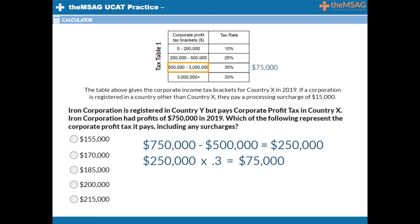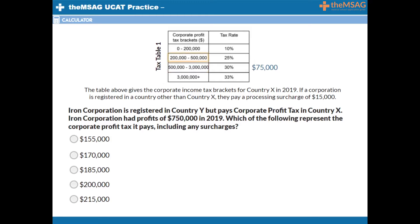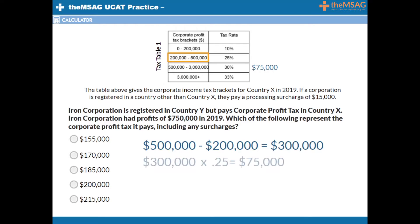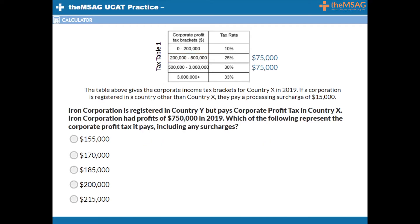Remember, we pay the full amount for all the lower tax categories. The $200,000 to $500,000 category represents $300,000 of profit because $500,000 minus $200,000 equals $300,000. This $300,000 is taxed at 25%. $300,000 times 0.25 gives $75,000 — that's another $75,000 of tax. The lowest tax category that must be paid is the $0 to $200,000 category. This represents $200,000 of profit taxed at 10%. $200,000 times 0.1 gives $20,000.